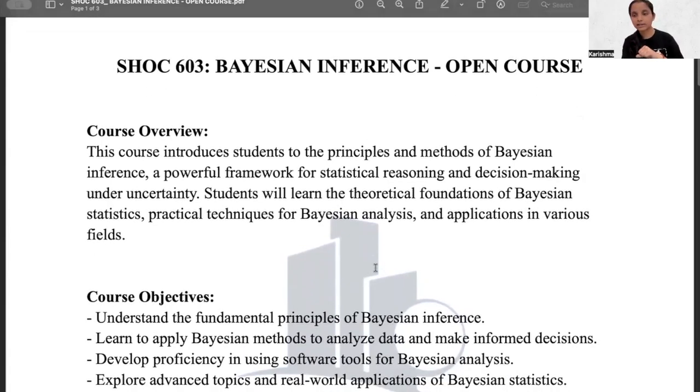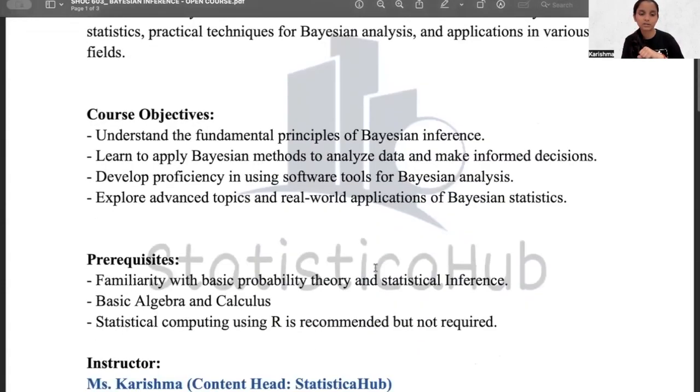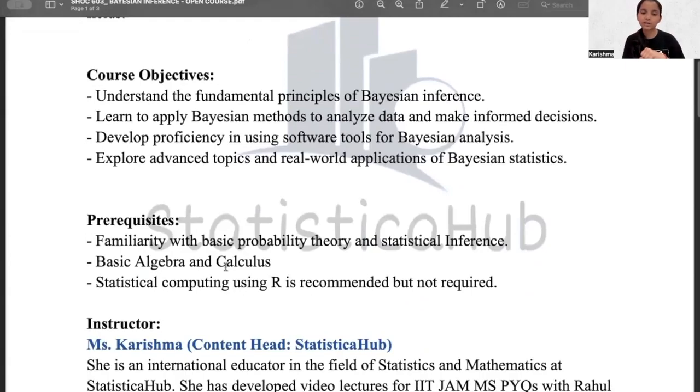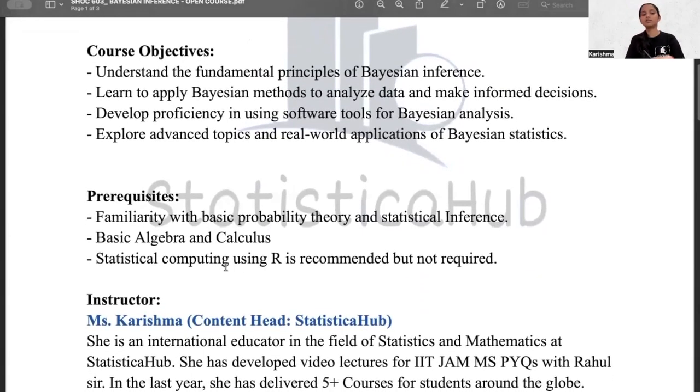You can also visit our site to download this or see this PDF. What are the prerequisites? The prerequisite for this course is basically you need to know basic probability theory and statistical inference and basic algebra and calculus. Statistical computing using R, if you know R that is good, but if you don't know, it's okay.